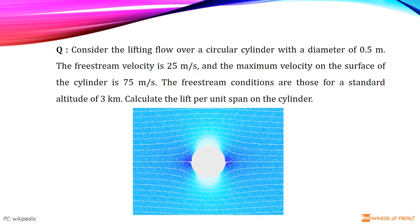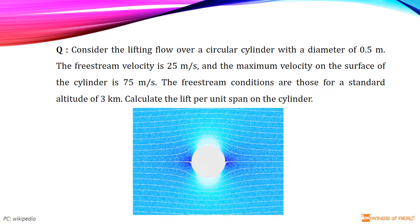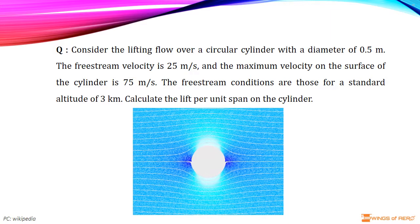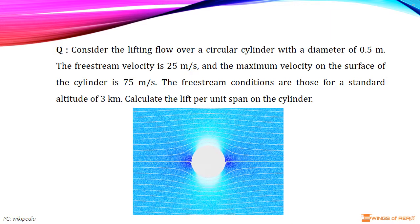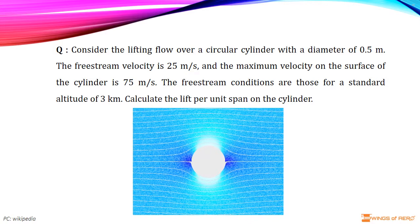The free stream velocity is 25 meter per second and the maximum velocity on the surface of the cylinder is 75 meter per second. The free stream conditions are those for a standard altitude of 3 kilometer.